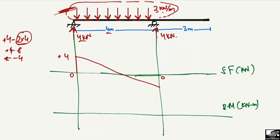At support B, the reaction of +4 kN acts upward, which closes the shear force diagram back to zero. The diagram shows a positive shear force region and a negative shear force region. This completes the shear force diagram for this beam.